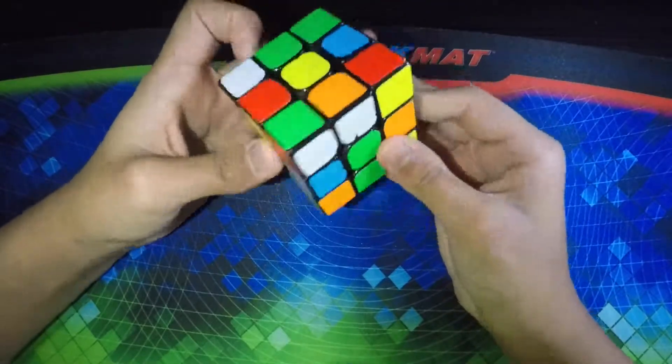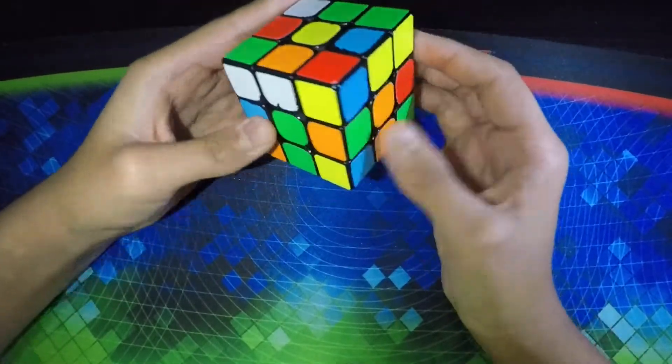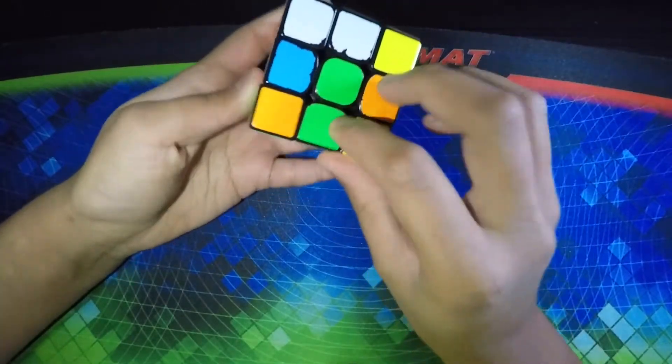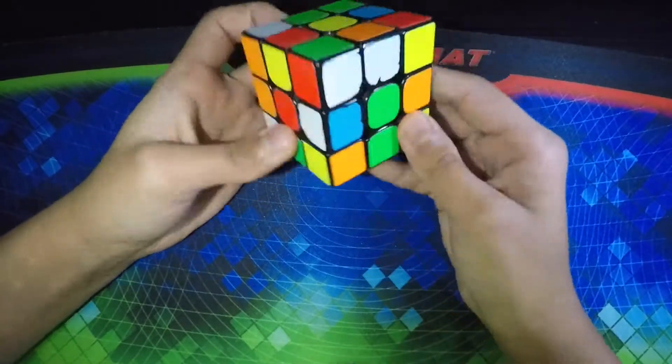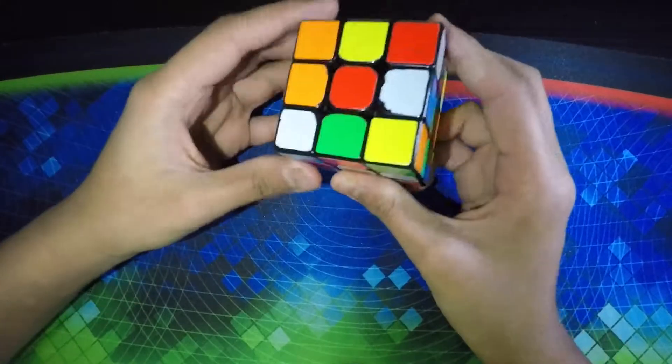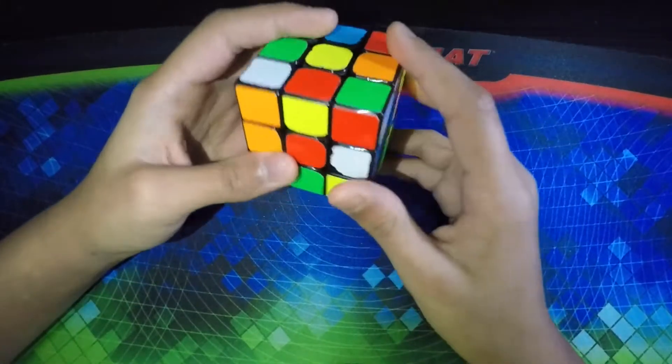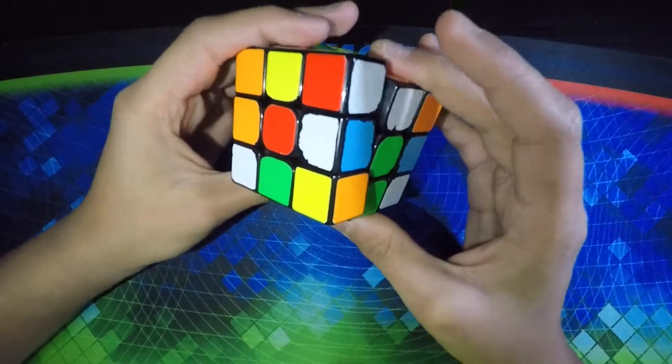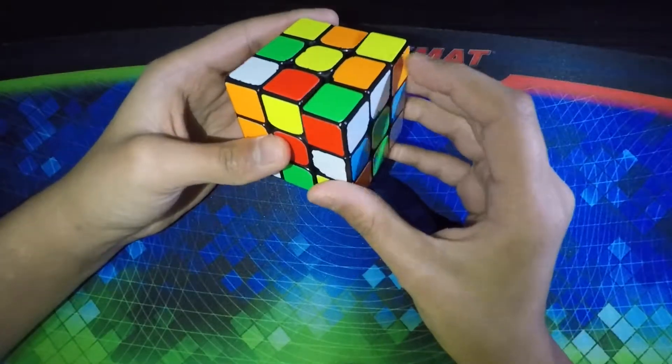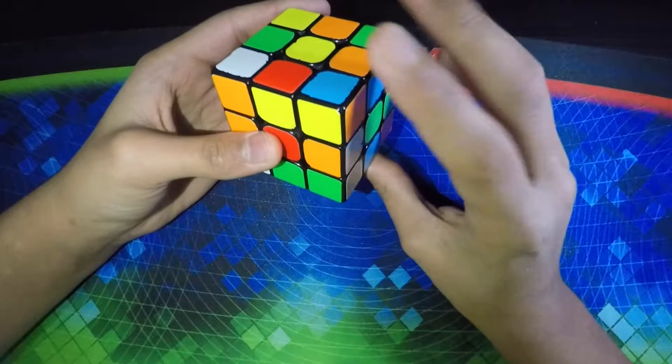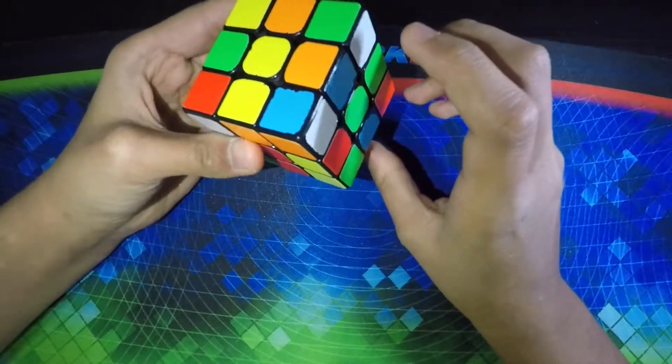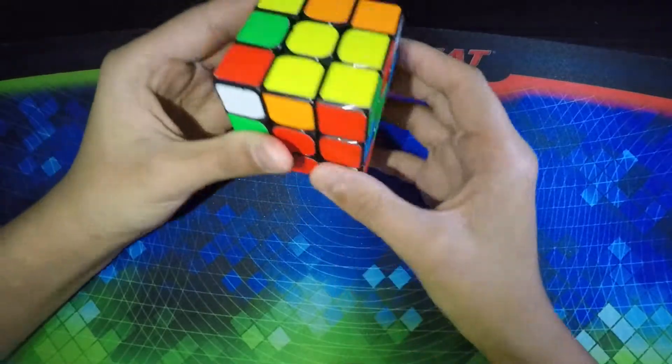Looking at the cube, it's a pretty straightforward cross. We have an edge here, an edge here, and an edge here, and the green's already solved. Basically what I did was, I put the red edge on the back and these two are on the right. I put the red edge down with a B, did an R prime to put the blue down, and then did an F to put down the orange. Then I did a D2 to line them all up, and then I put the green back down with an R.